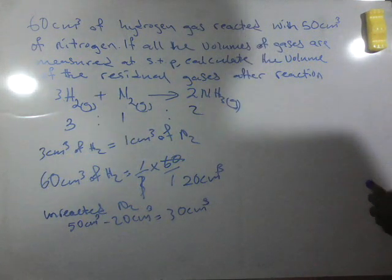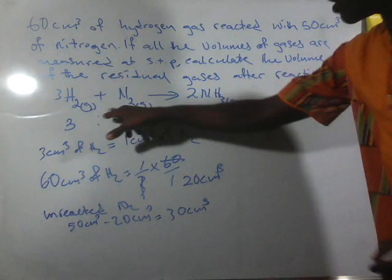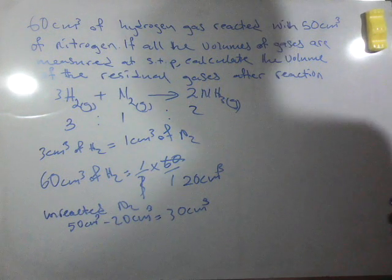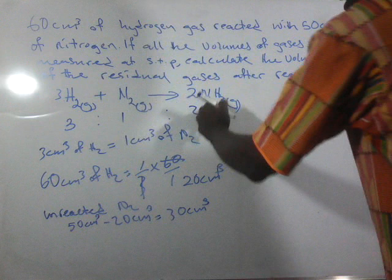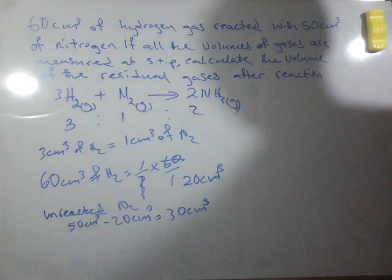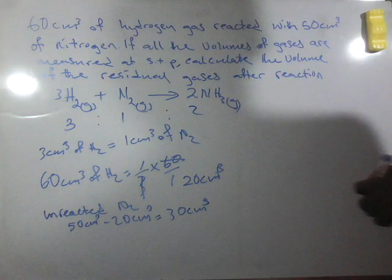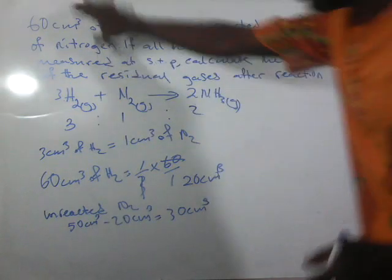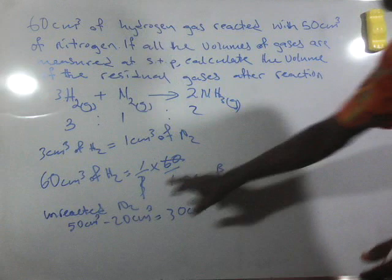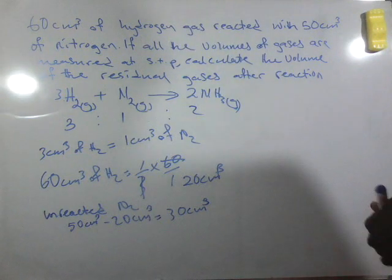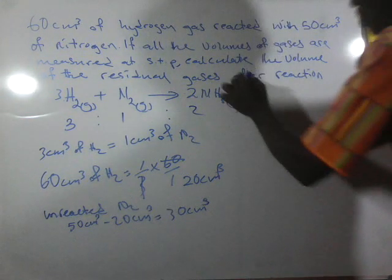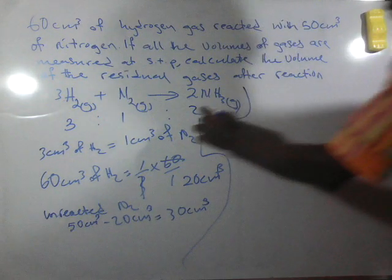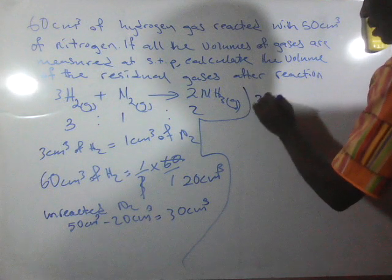Then remember, when they reacted they produce ammonia gas. Now producing ammonia gas means that we need to find out the volume of ammonia gas produced. We use the 60 cm³ of hydrogen since all the hydrogen combined completely with 20 cm³ of nitrogen.